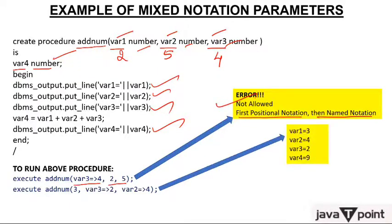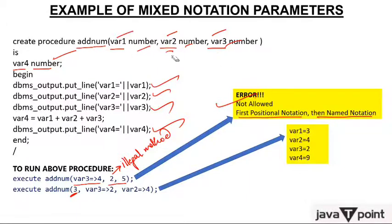So what is the correct, legal method? The illegal method was named before positional. The legal method is: three is a positional notation, so variable1 will have value three. Then variable3, now using named notation — no issue. Variable3 is having value two, variable2 has value four. Whatever you want to do, you can now do.